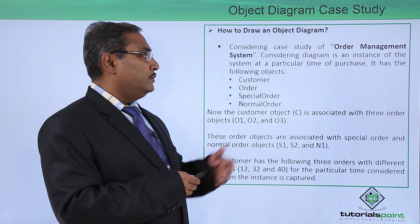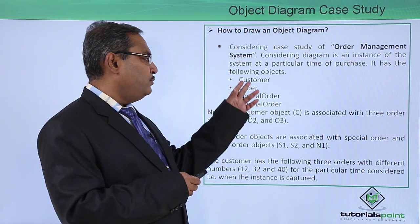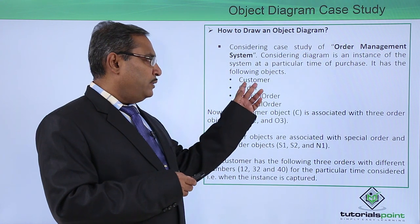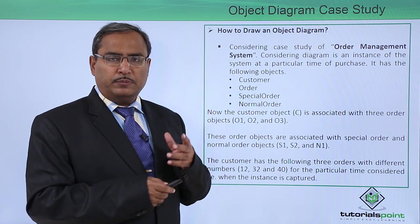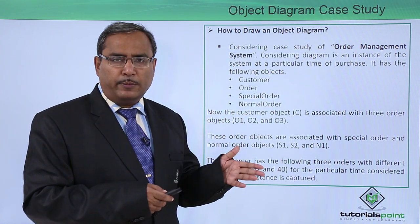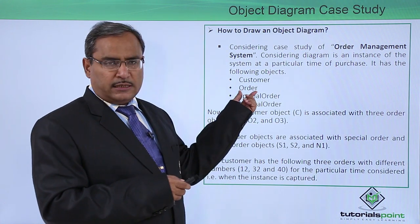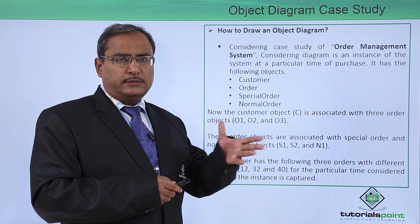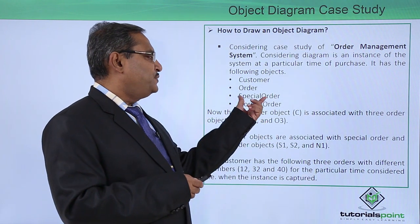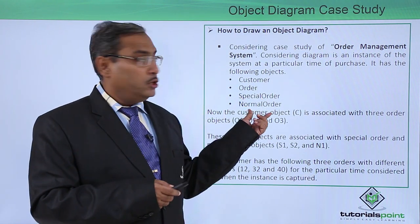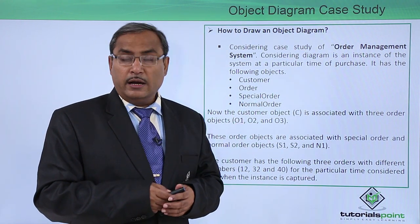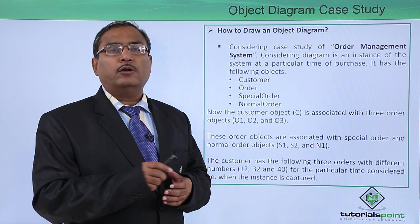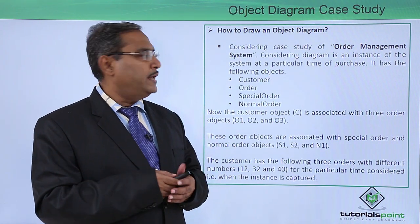It has the following objects. We have defined these respective objects. There is a customer class under which we will be defining our object. There is another class — order — under which we will be defining some set of objects, and special order and normal order. All of them are class names under which we will be defining one or more objects in the object diagram.